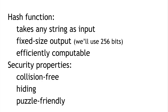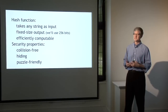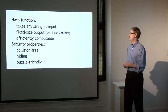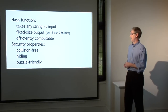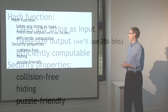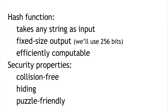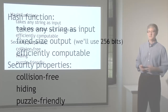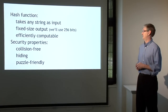We're going to need hash functions that are cryptographically secure. The cryptographic properties of hash functions are a complicated topic in general, but we're going to focus on three particular properties: that the function is collision-free, that it has a hiding property, and that it's puzzle-friendly. For each of these, I'll talk about what the property means and why it's useful to have a function with that property.